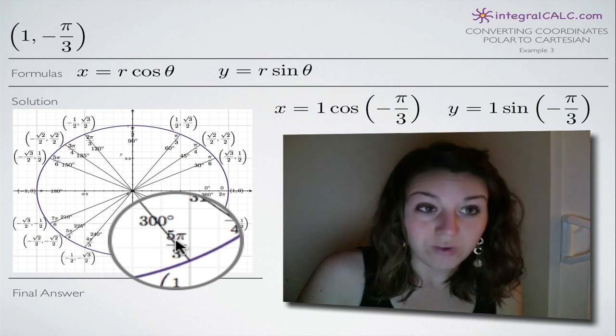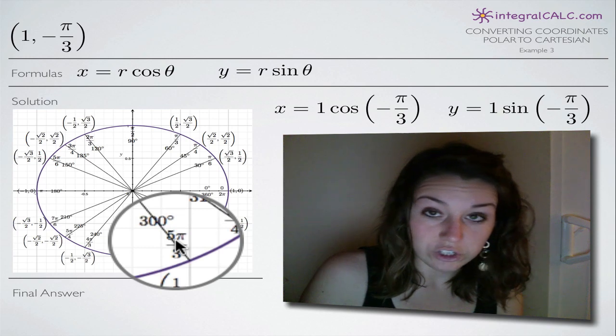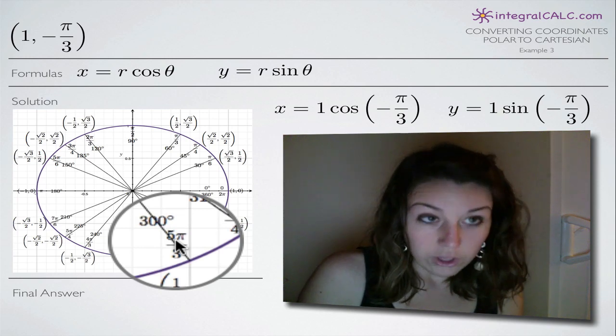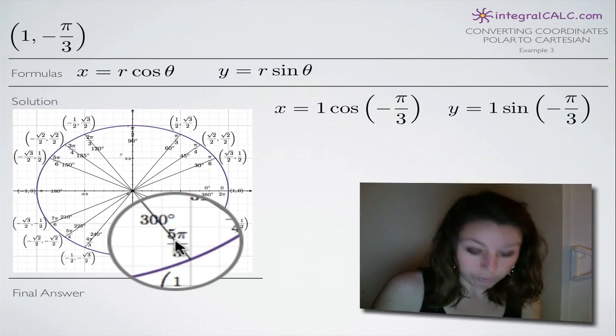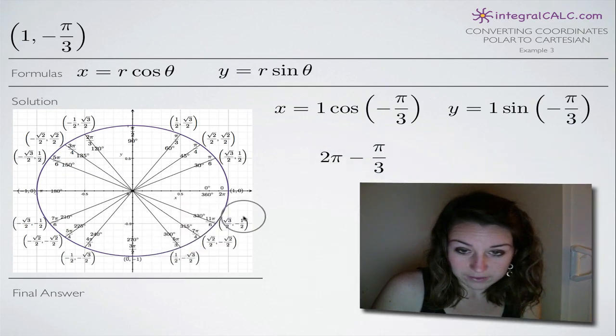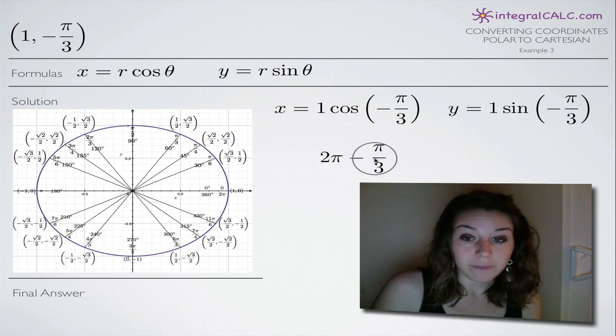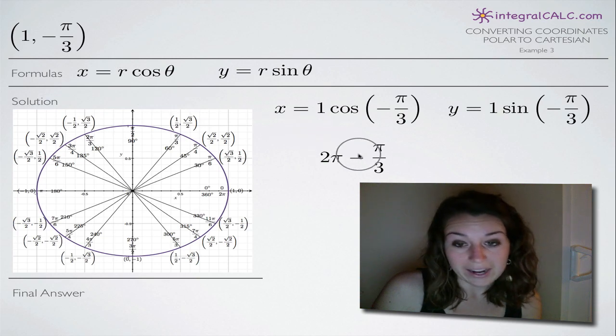If that's uncomfortable for you and you'd rather convert the coordinate so you know for sure what it is on the unit circle, you can subtract pi over 3 from 2 pi. So what that looks like is this: We would say 2 pi minus pi over 3. And keep in mind that it's not minus a negative pi over 3 because then you would be adding, it's just 2 pi minus pi over 3.